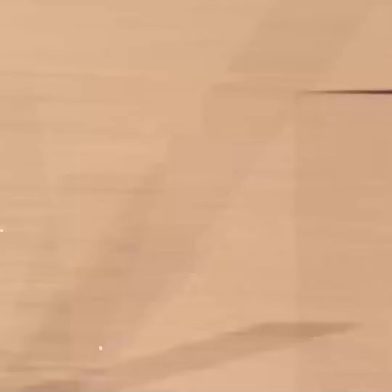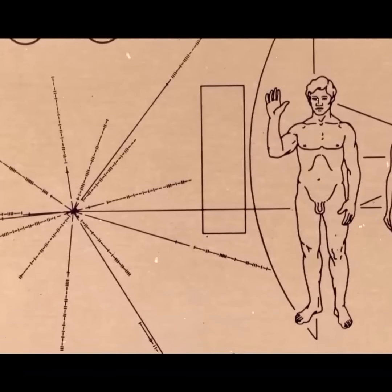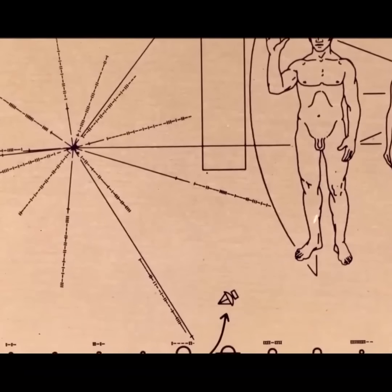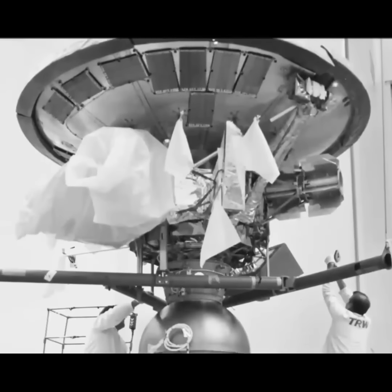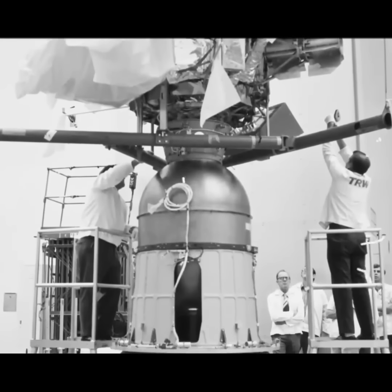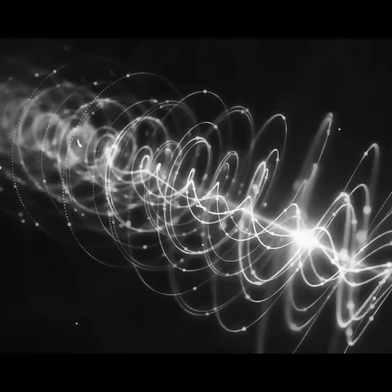Since we believe the laws of physics are the same everywhere, these wavelengths are universal. This makes them a perfect standard of measurement that any civilization could understand. For example, on the Pioneer spacecraft's gold plaque, we used a particular wavelength as a unit of length to describe information about humans and the spacecraft's origin. So, if an extraterrestrial civilization wanted to talk to us, they could have used the frequency of the WOW signal. And that's pretty amazing.